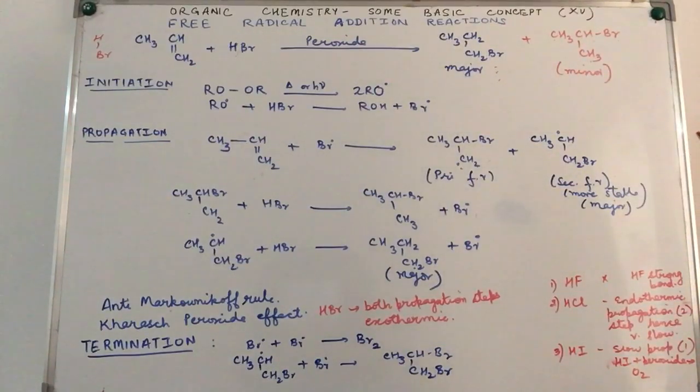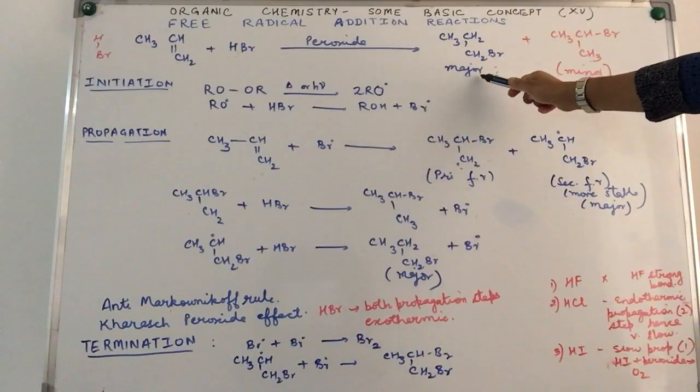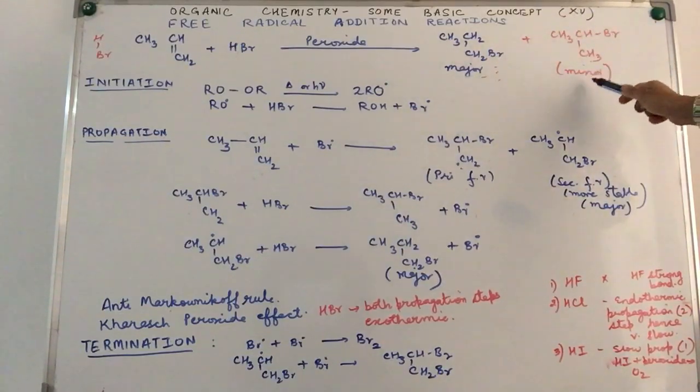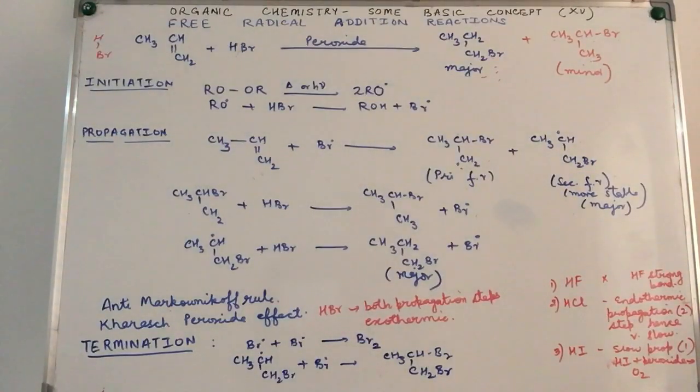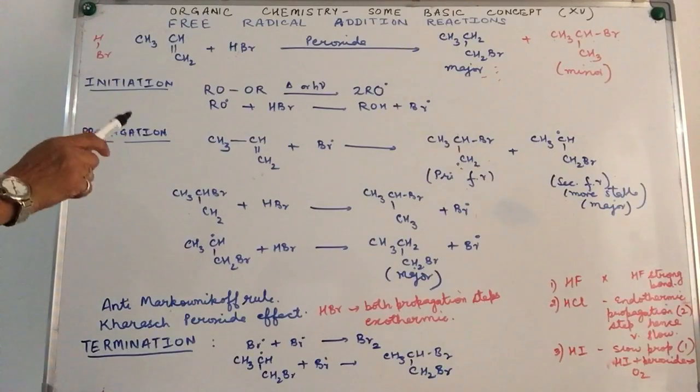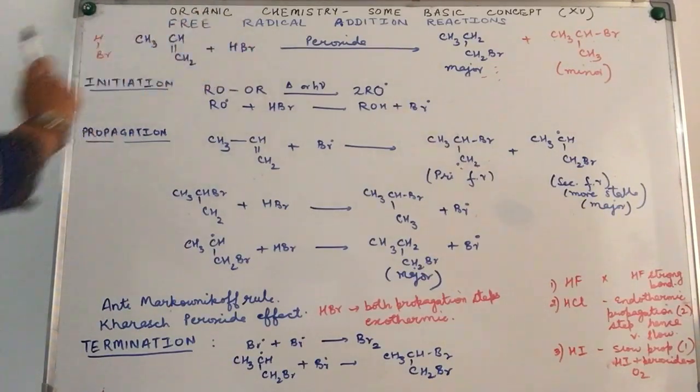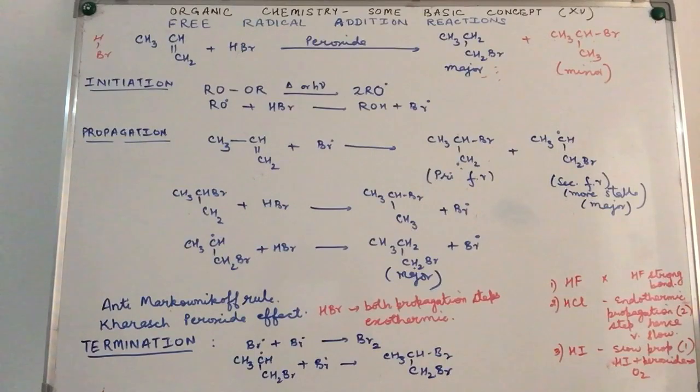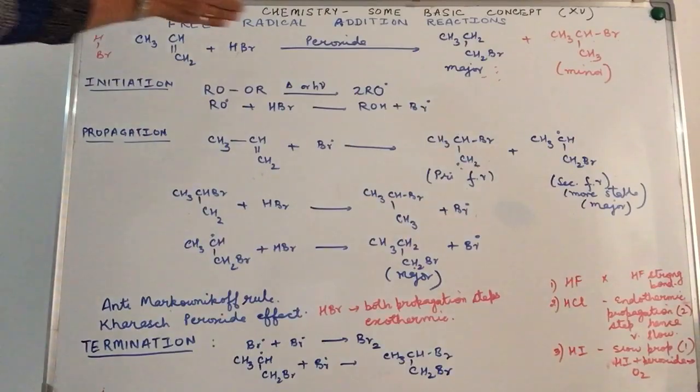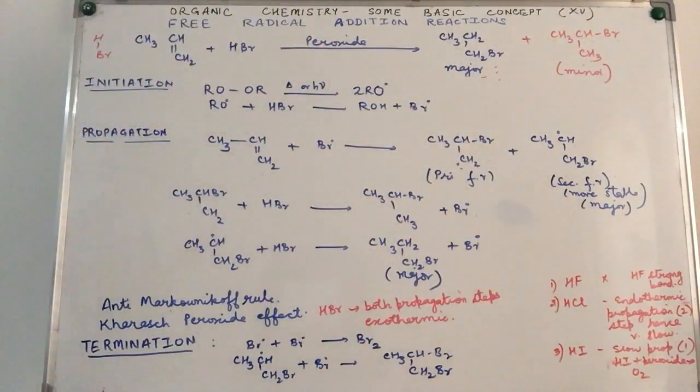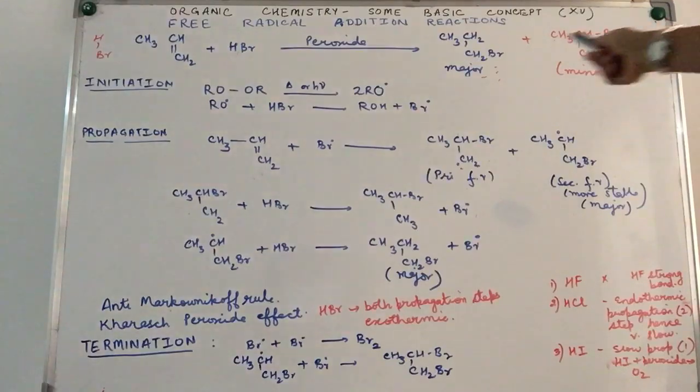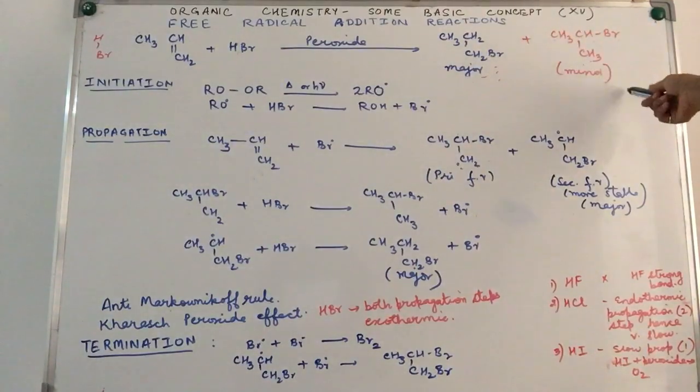Experimentally it has been observed that our primary is the major product, whereas the secondary product is minor. That means it is formed in a smaller amount, and it has been observed that this happens specifically when you are using a peroxide during the course of the reaction. So what does the peroxide do? Because if you don't use the peroxide, the situation immediately gets reversed.